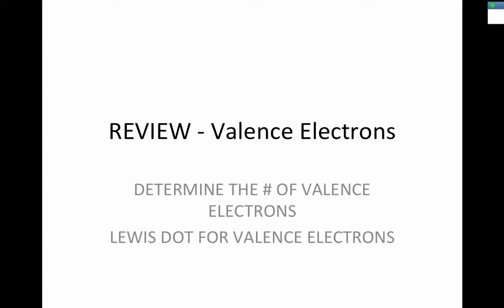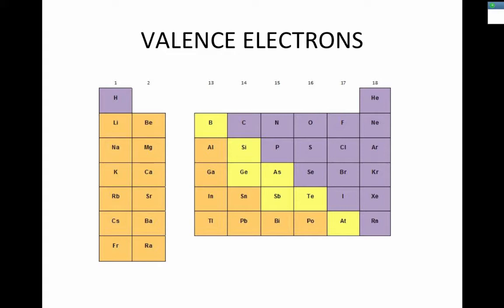As you recall from before vacation, we talked about valence electrons. We discussed how for the main group elements, you can determine the number of valence electrons based on their group number. For the alkali metals in group one, they have one valence electron. The alkaline earth metals are in group two, so they have two valence electrons. For elements in groups 13 through 18, their number of valence electrons is their group number minus 10.